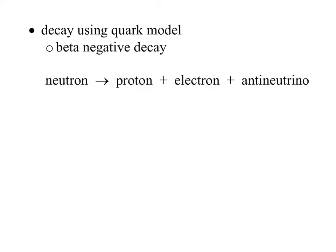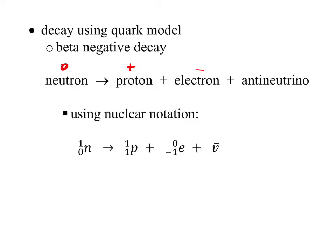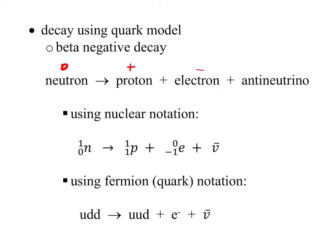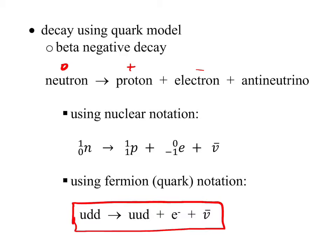In beta negative decay, a neutron turns itself into a proton and gives off an electron and an anti-neutrino. In standard nuclear notation, a neutron (mass number 1, charge 0) becomes a proton (mass number 1, charge 1), plus an electron (charge -1) and an anti-neutrino. We can also write this using quark notation: the neutron (UDD) becomes a proton (UUD), with an electron and anti-neutrino written the same as in nuclear notation, since only nucleons are made of up and down quarks. That is beta negative decay written in fermion or quark notation.